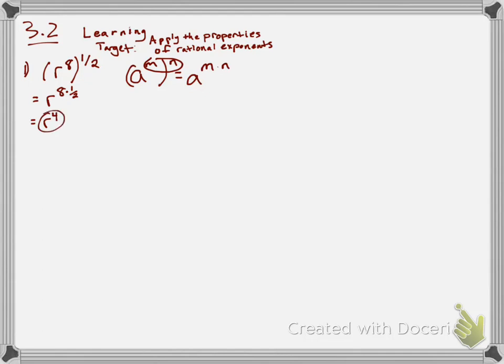Of course, this could be a little bit more tricky if both exponents were fractions — I might end up with a fraction as my final exponent. But in this case it turns out to be nice: it's just four. Let's look at another example that might be a little trickier. Let's say I have 243 v to the power of 15, and all of that is being raised to the four-fifths power.